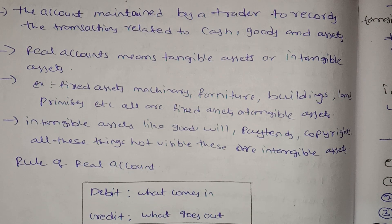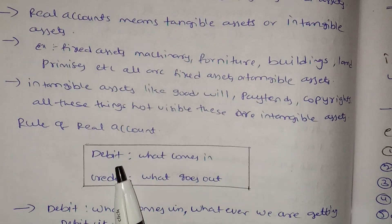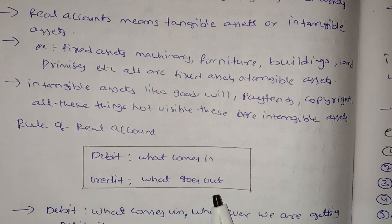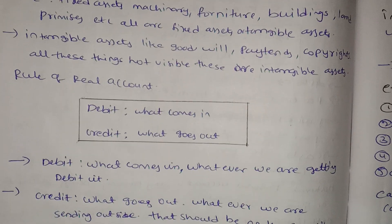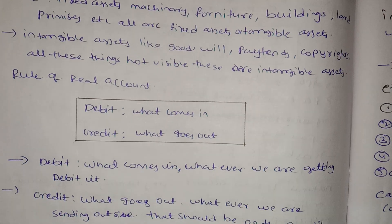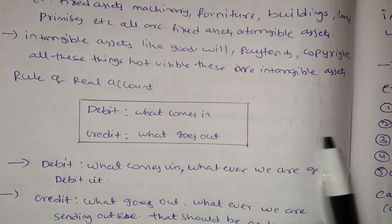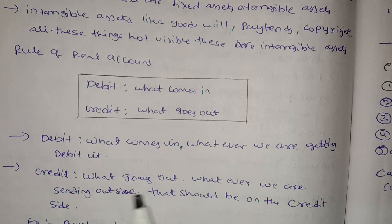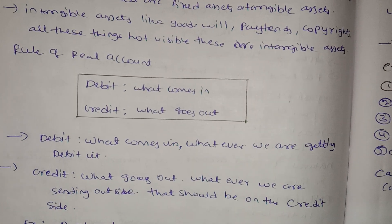The rule of real account: debit what comes in, credit what goes out. Whatever we are receiving, we debit it. Whatever we are sending outside, we credit it. Debit what comes in, credit what goes out.